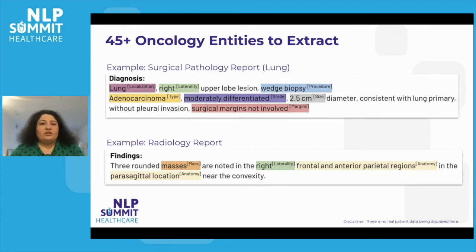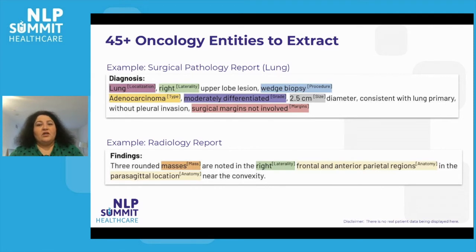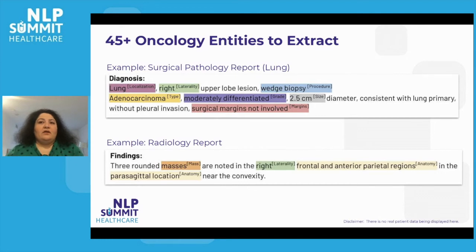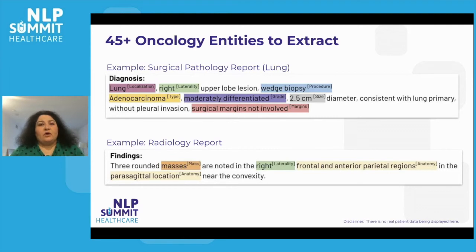A second example shows findings from a radiology report: three rounded masses are noted in the right frontal and anterior parietal regions in the parasagittal location near the convexity. In this sentence, three masses are labeled as 'mass,' right is the laterality, and frontal and anterior parietal regions are the anatomy labels. Our approach has been to first categorize content as broadly as possible, achieving high recall with entity extraction, then drilling down to achieve high precision by mapping entities to standard concepts.